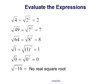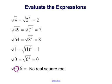The square root of 4 is 2; the square root of 49 is 7; the square root of 64 is 8; the square root of 1 is 1. The square root of 0: since 0 times 0 is still 0, the square root of 0 is 0. But that last problem stands out from the rest — the square root of negative 16 has no real square root. That negative sign is inside the square root, and there is no real square root for that answer.